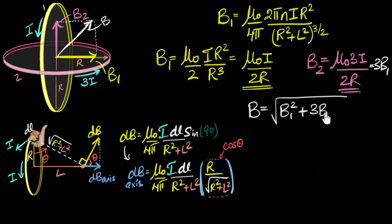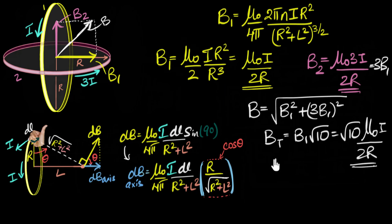So this is going to be B1 squared plus B2 squared, which is three B1 the whole squared. And so the total magnetic field is going to be, I can take B1 common, and I will get root of one plus nine, that's root 10. So that's B1 times root 10. And there we go. So that's going to be root 10 times mu naught i divided by two r.